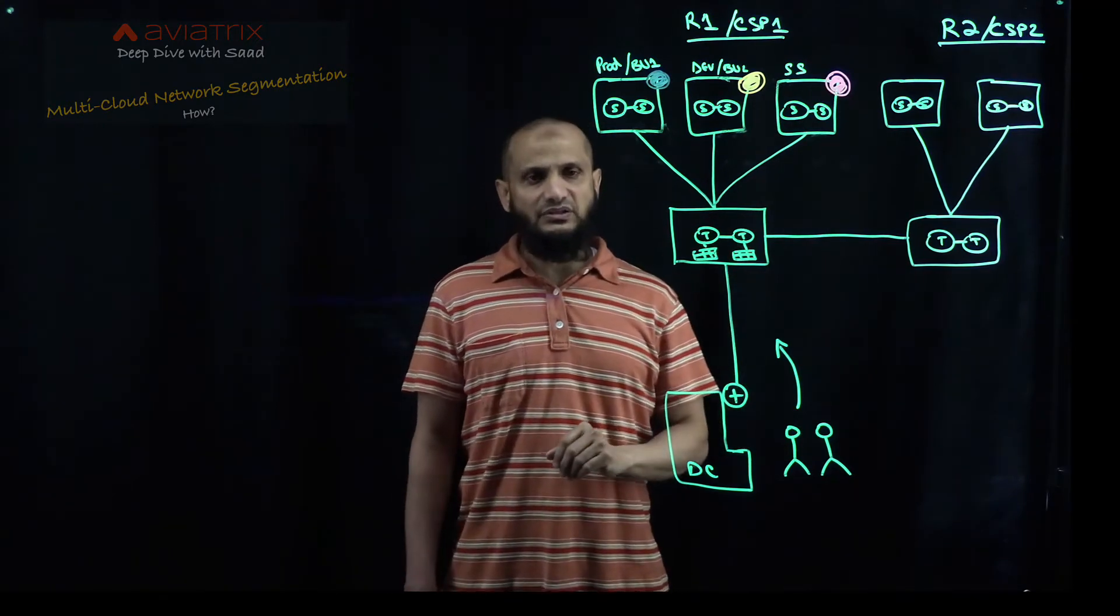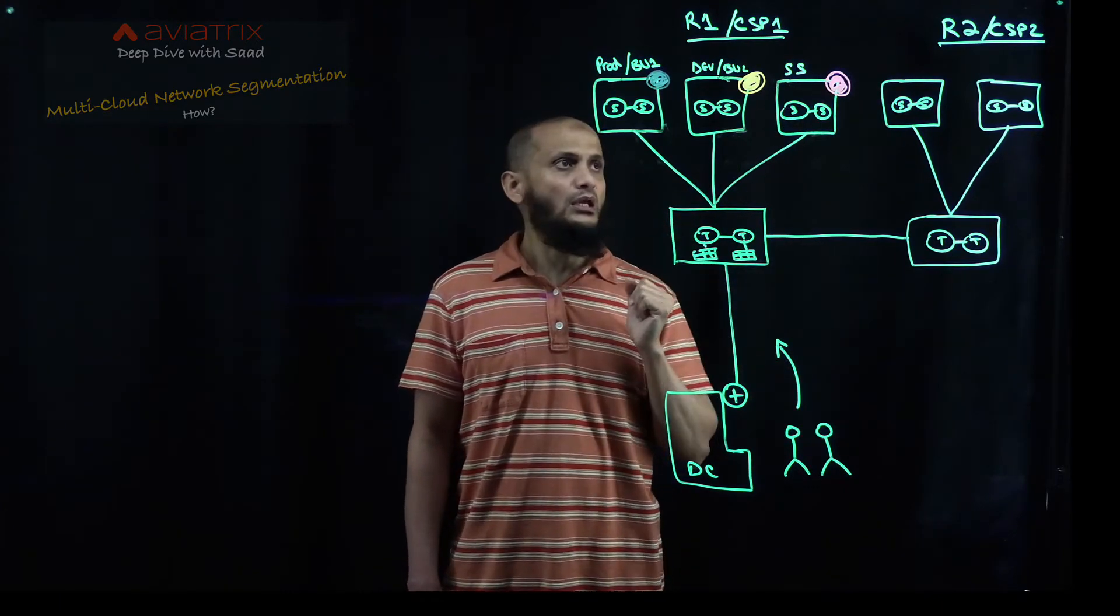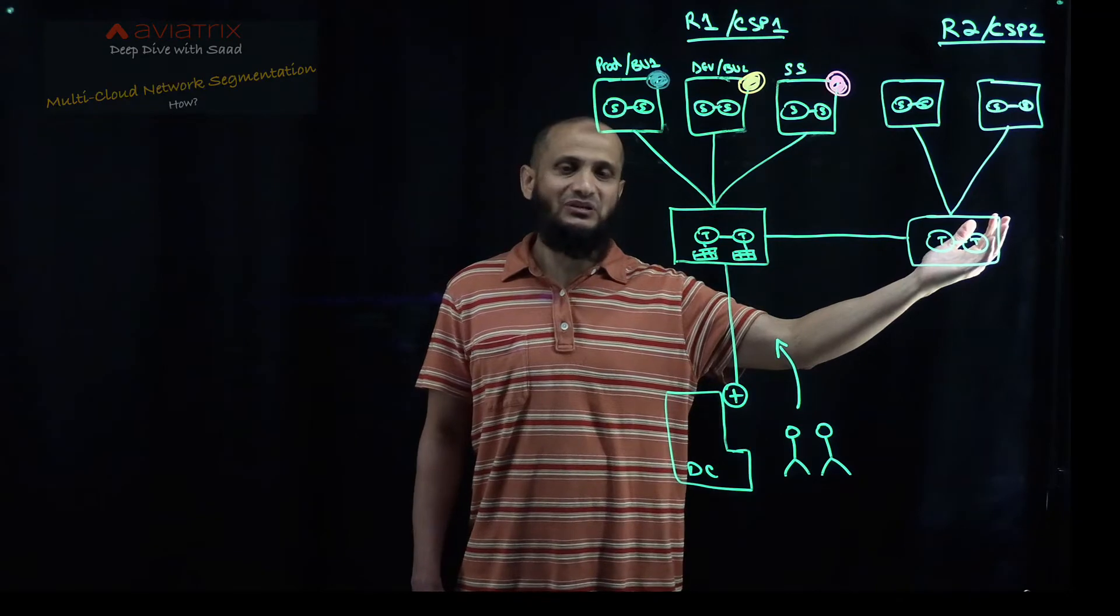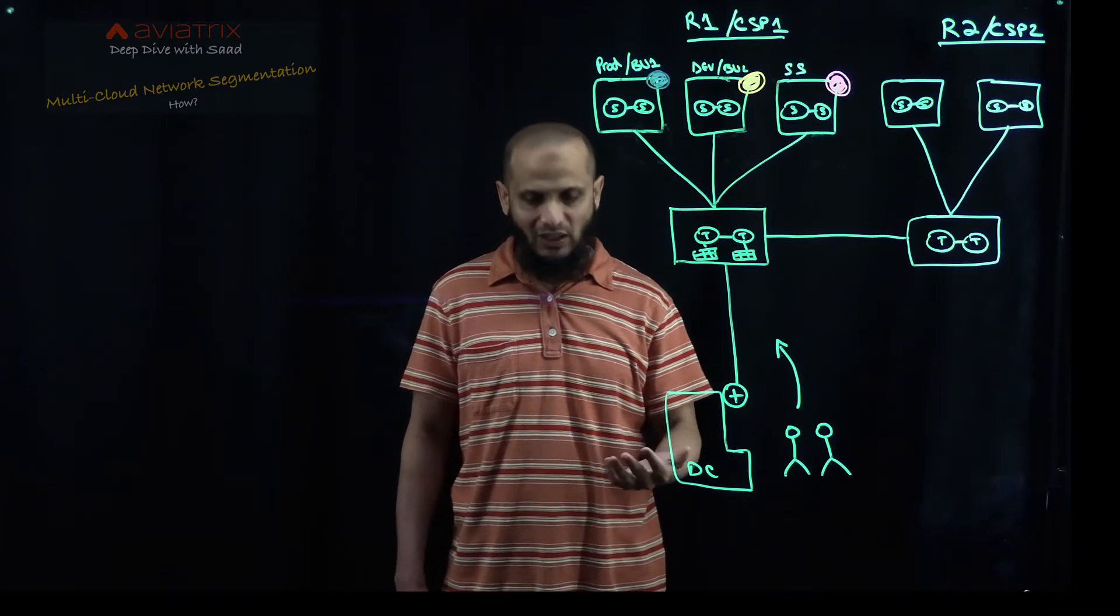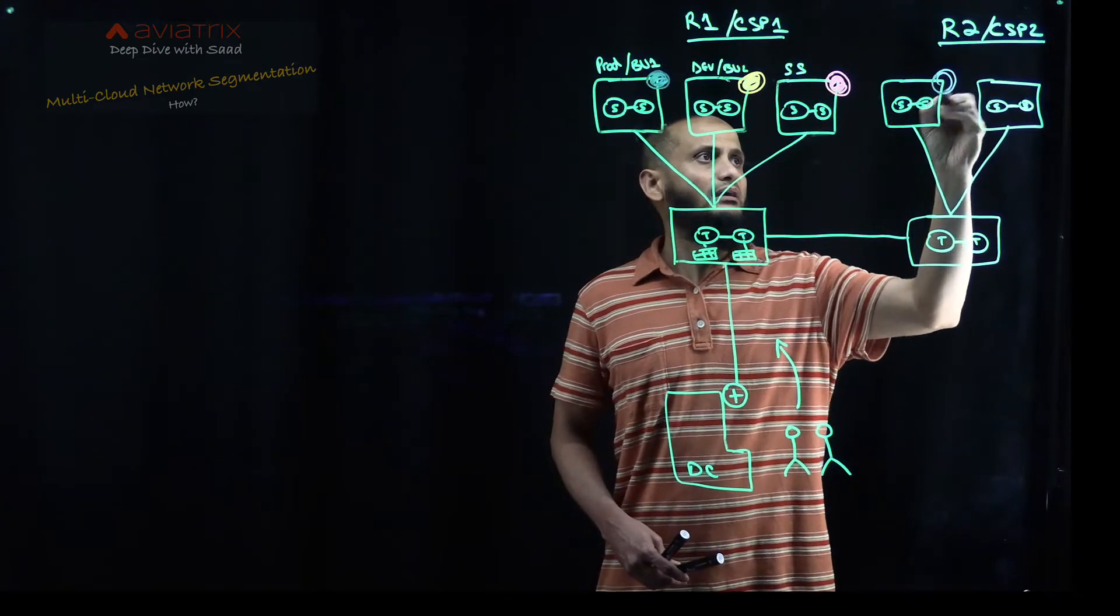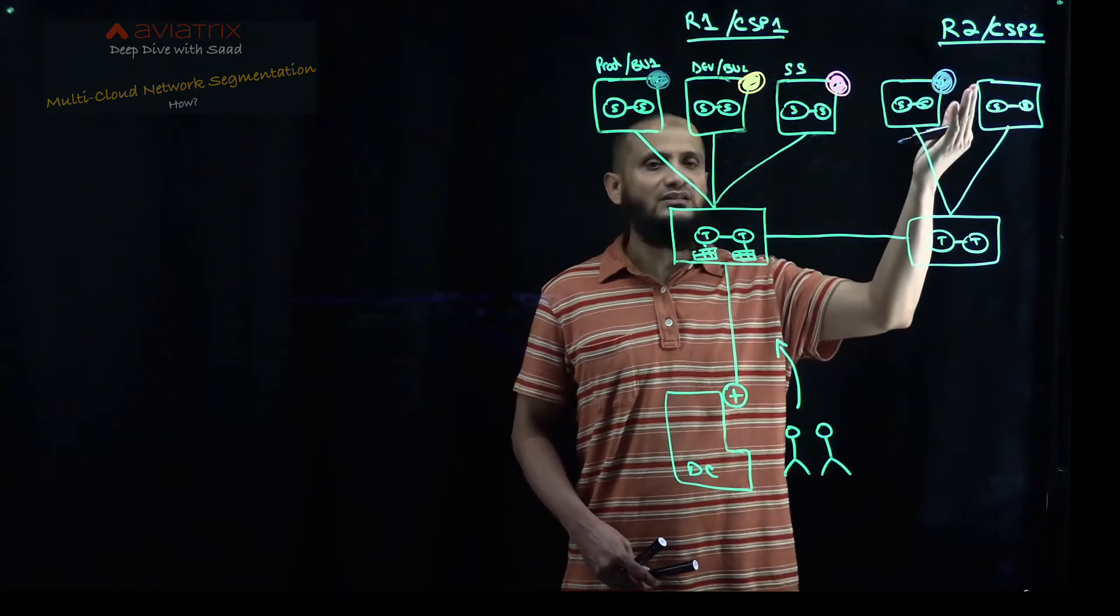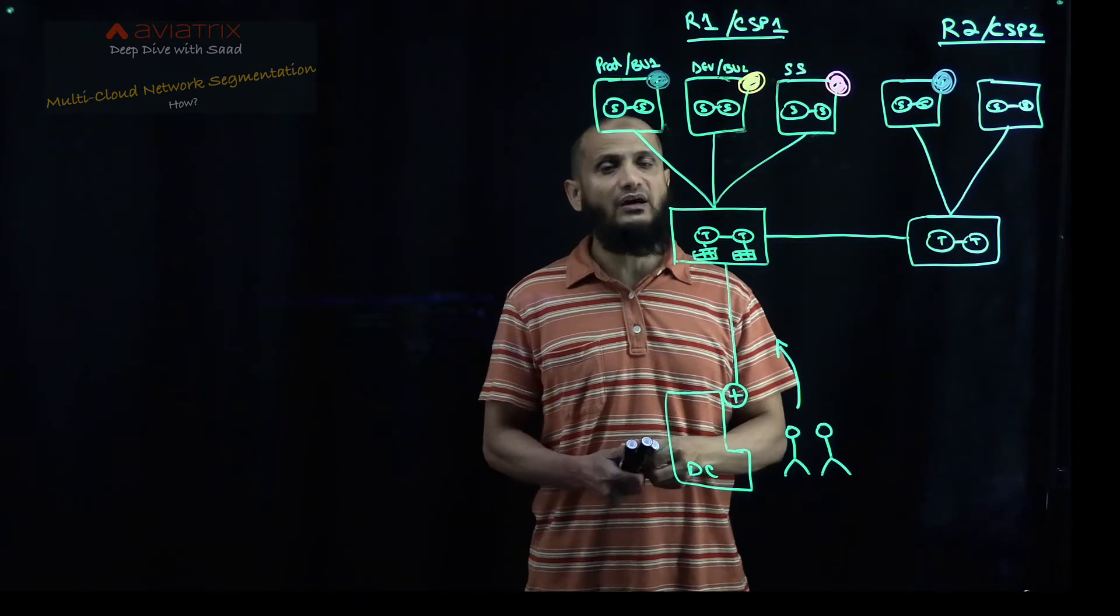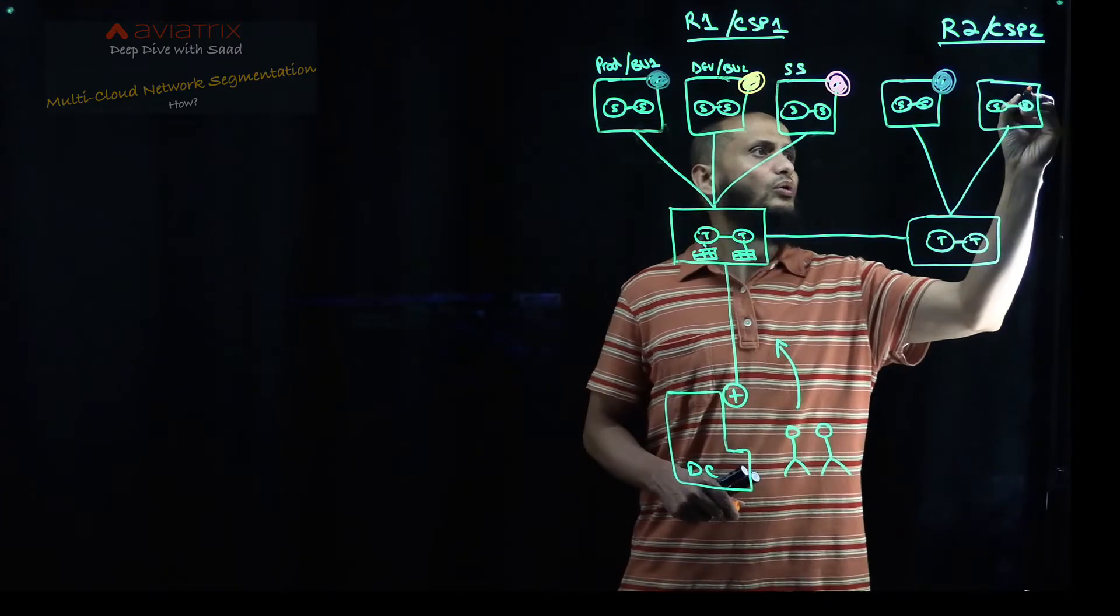As soon as you define the segments, then blue cannot communicate with orange or the red one. Now, what about you have some applications, maybe in region number two, or maybe in cloud number two, which also belongs to the same prod, or maybe business unit one. So at this time, what you have to do, you have to just color this particular network, cloud network. If this is an Azure, then it becomes the VNet, just color it with the blue. And let's say if the other environment is considered as your dev environment also, then just mark it with the orange also.